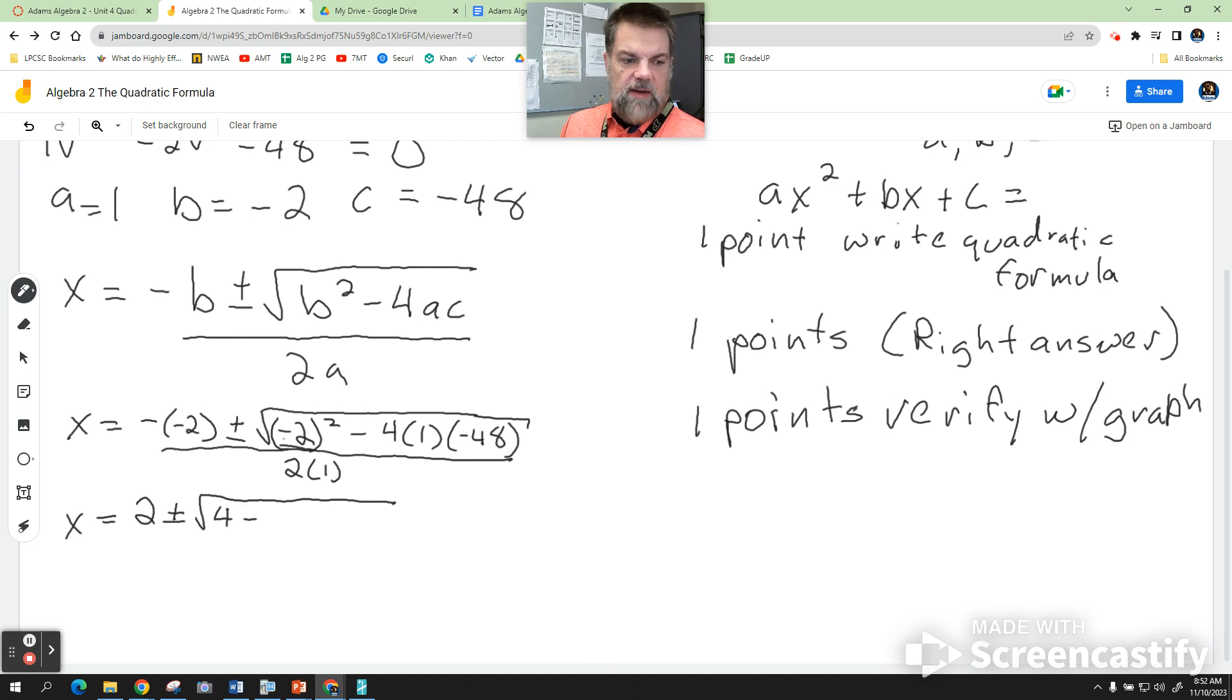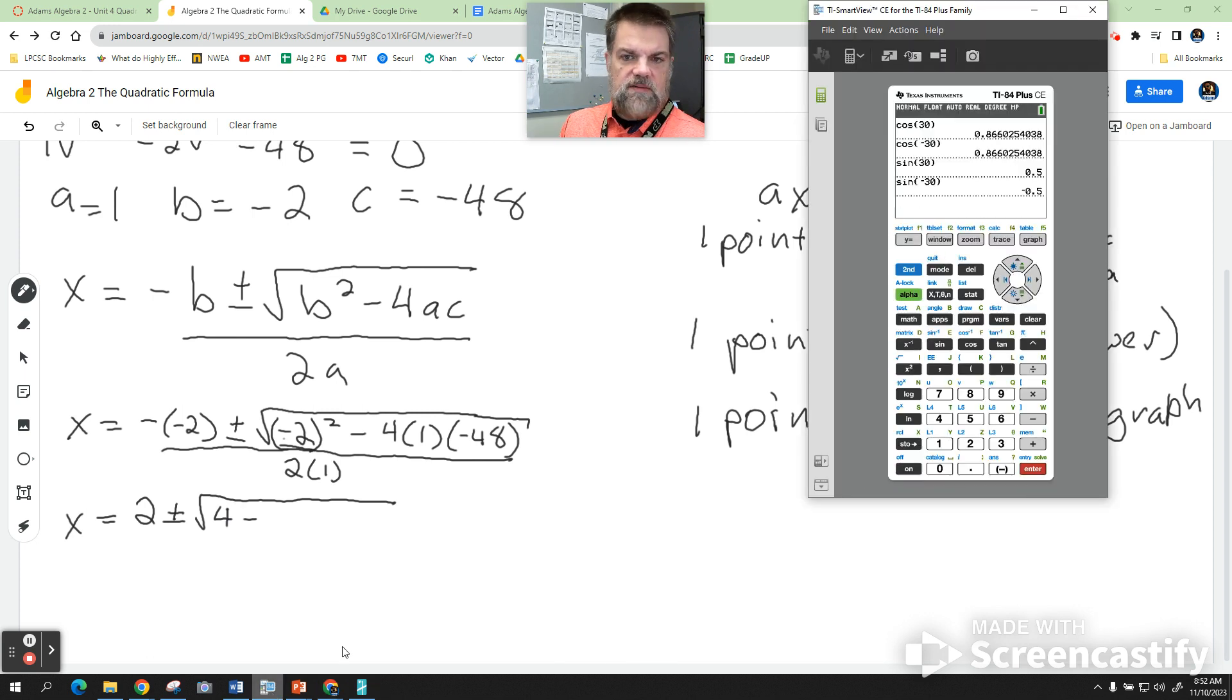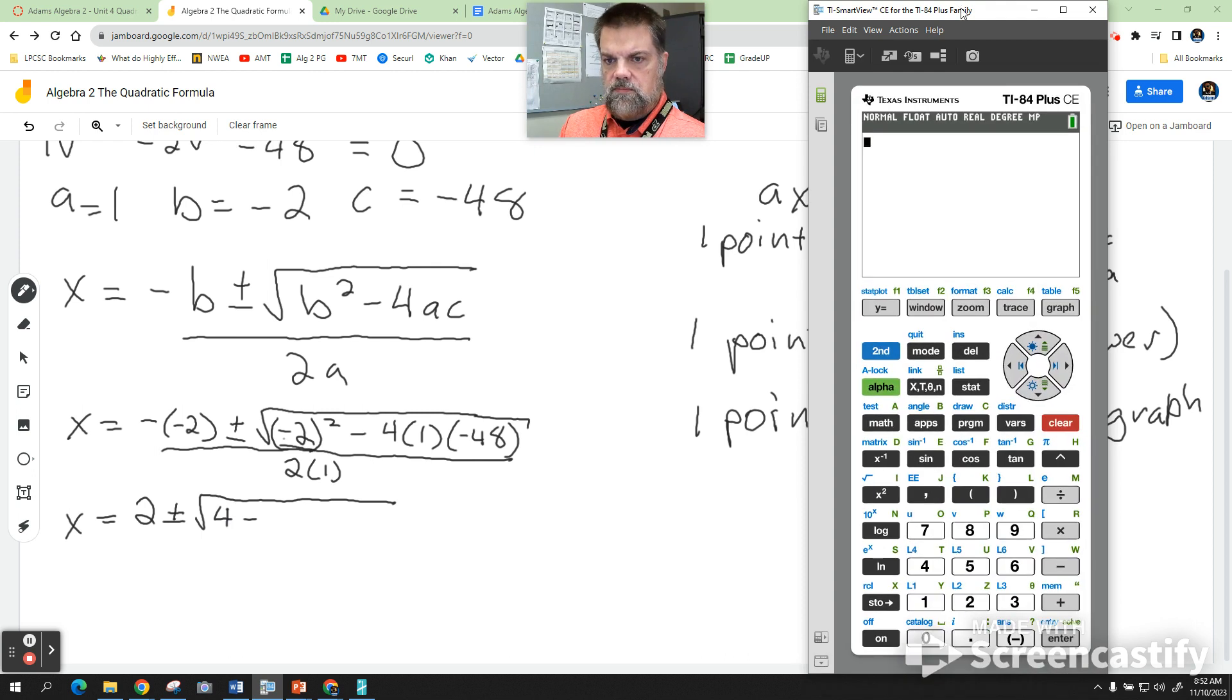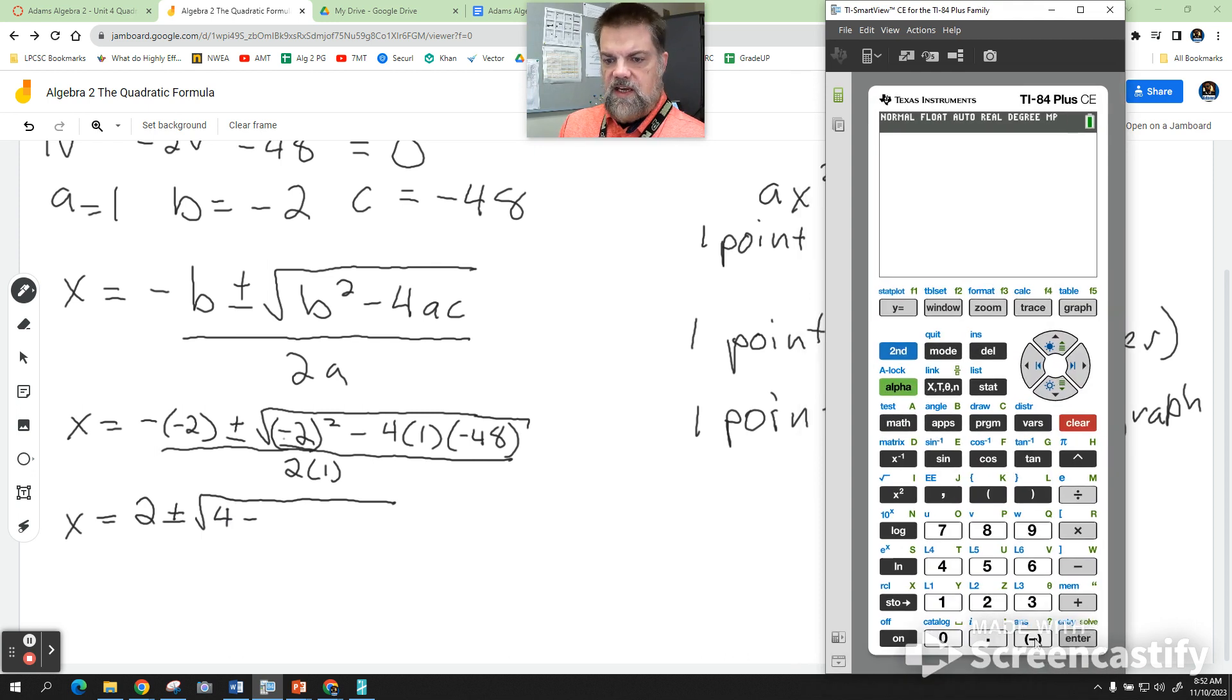Minus - now I'm going to break out the calculator on this one. I'm going to say negative 4 times 1 times negative 48. That's a positive 192, all over 2 times 1, which is 2. So then in my next step - notice I'm writing every little teeny tiny step down.